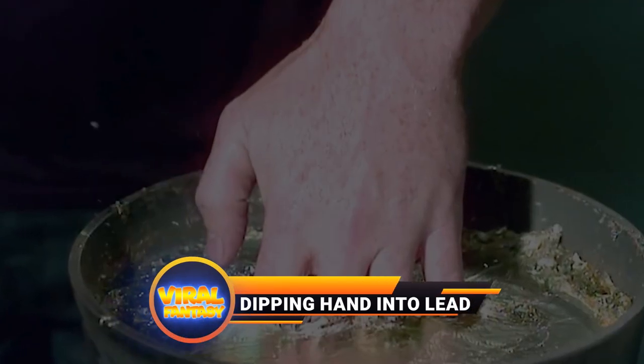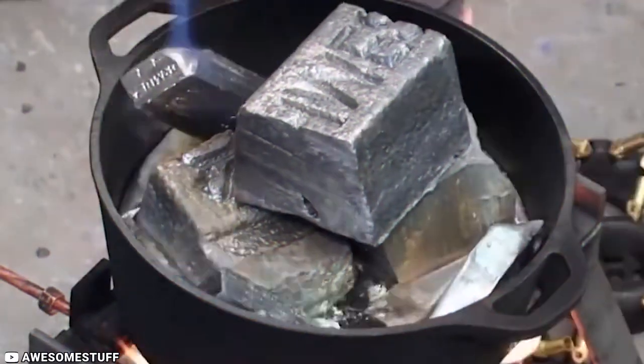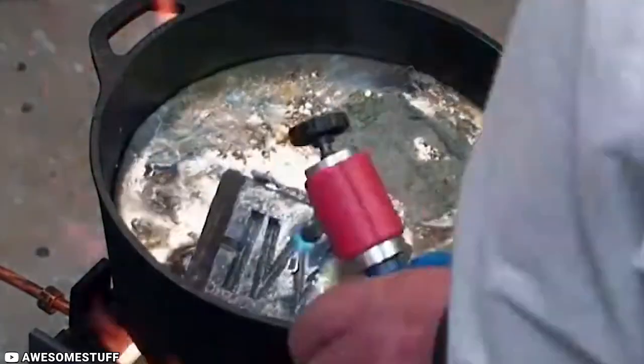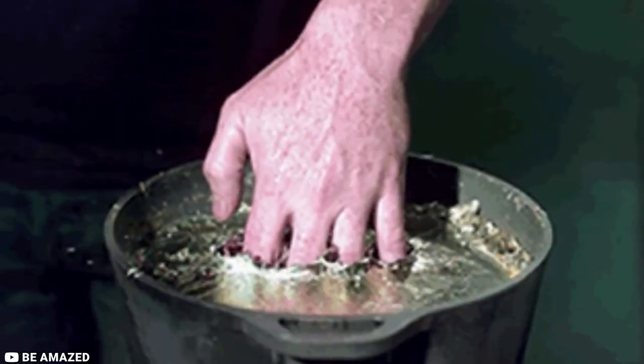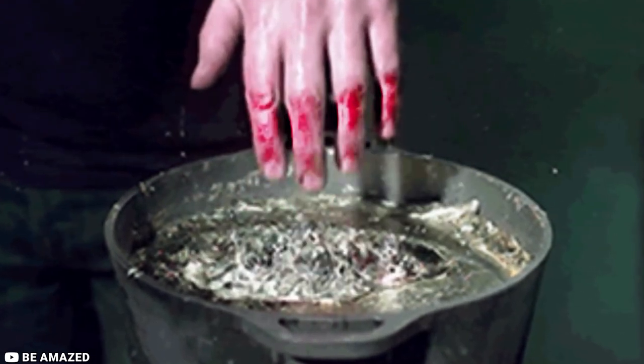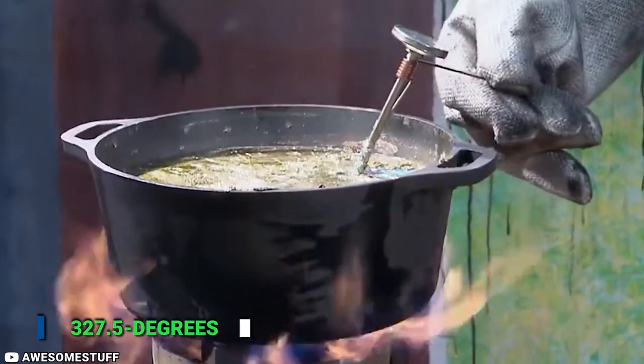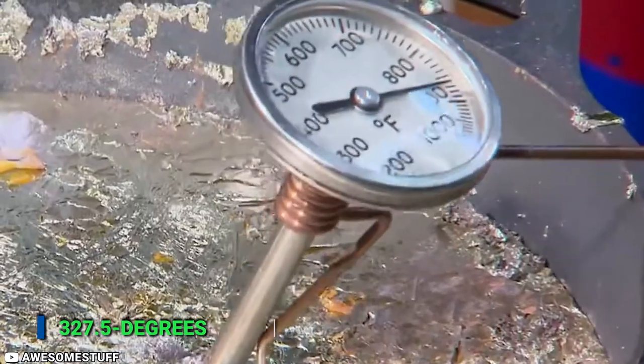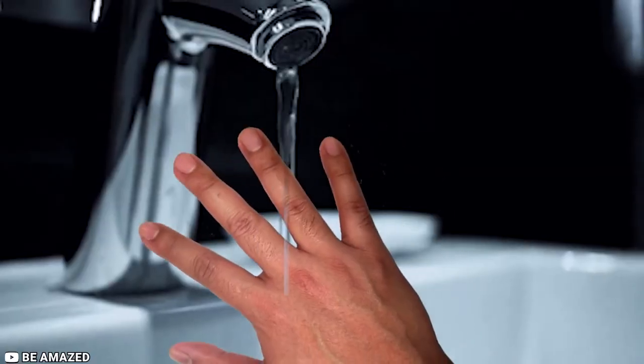Number 8, dipping hand into lead. Dipping your hand into molten metal seems ridiculous and dangerous at the same time. You can lose your hand by doing this. But today we are here with the things which are not obvious. Molten lead has a temperature of 327.5 degrees Celsius and you can dip your hands in it.